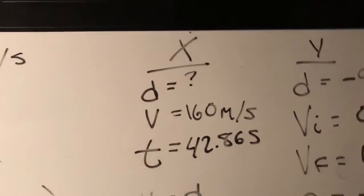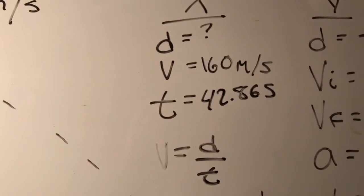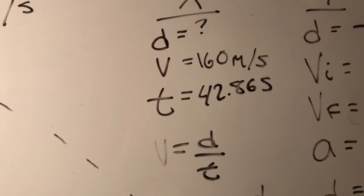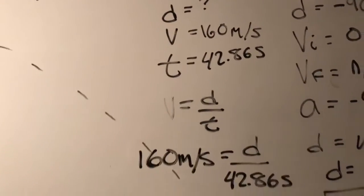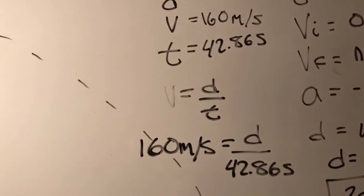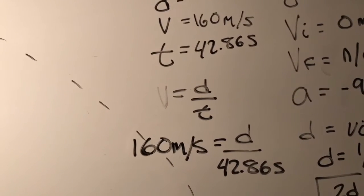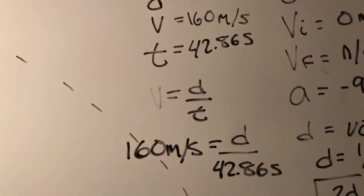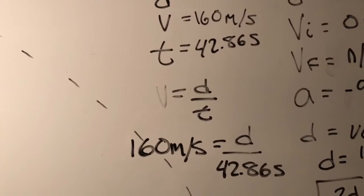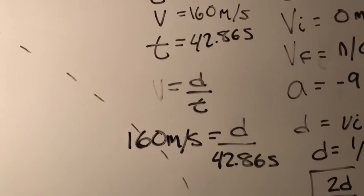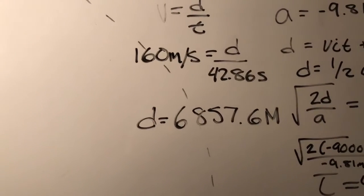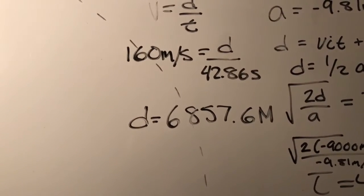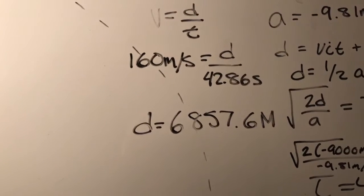Now we can solve for the x distance. The equation v equals d over t will work in this situation. Plugging in our variables, we have 160 meters per second equals d over 42.86 seconds. And then, once you do the cross multiplication of 160 and 42.86, you get a distance of 6,857.6 meters away from the target.